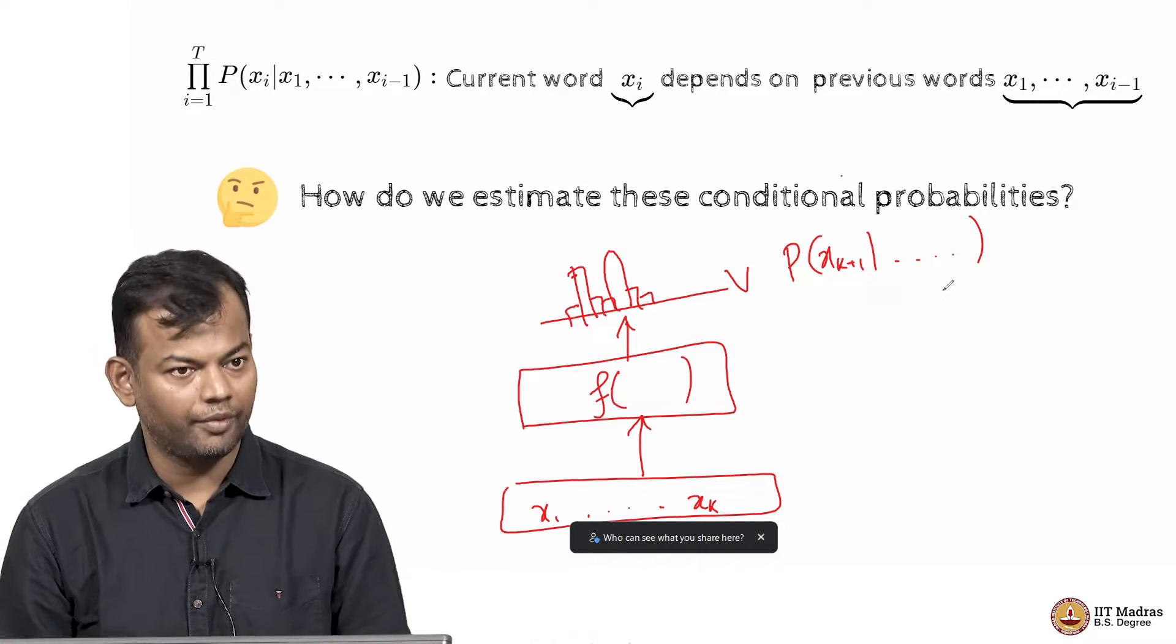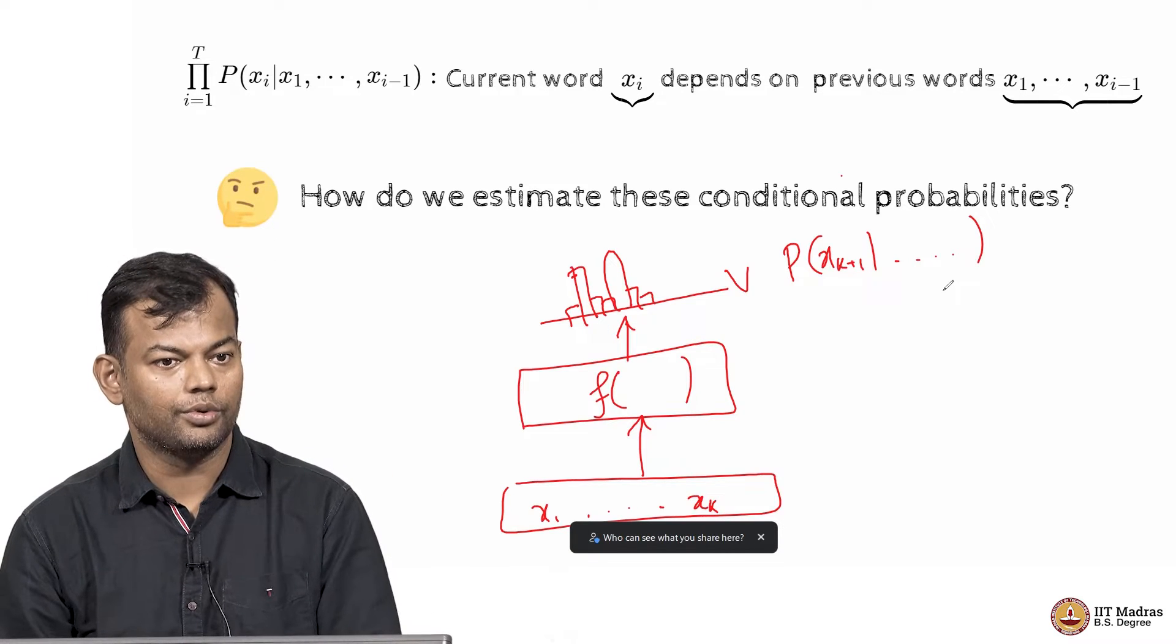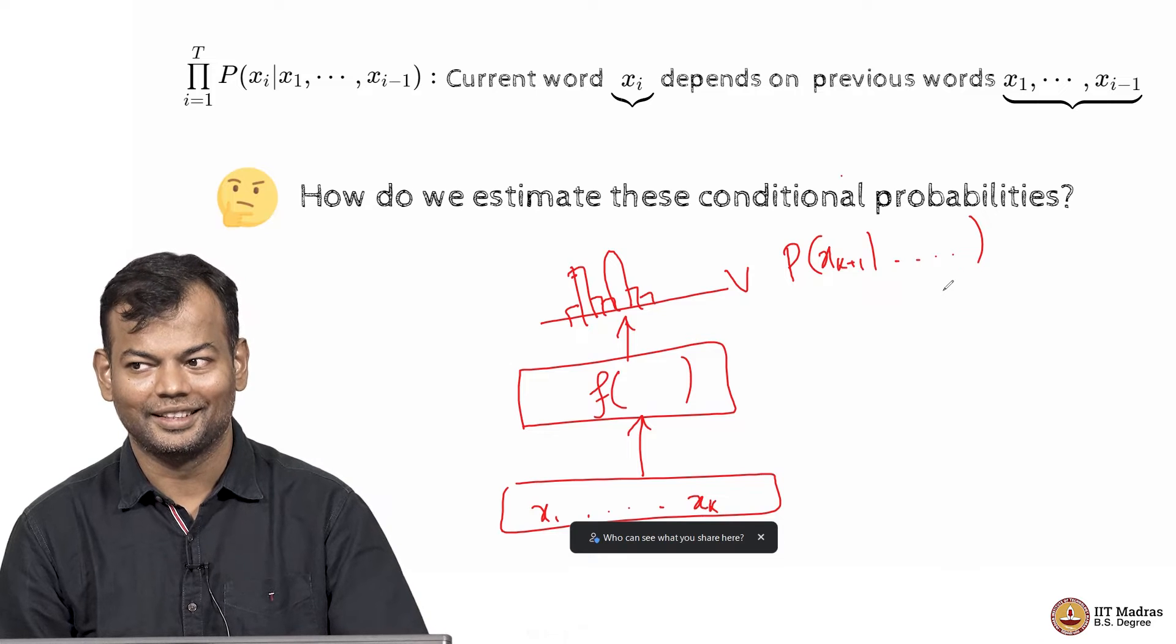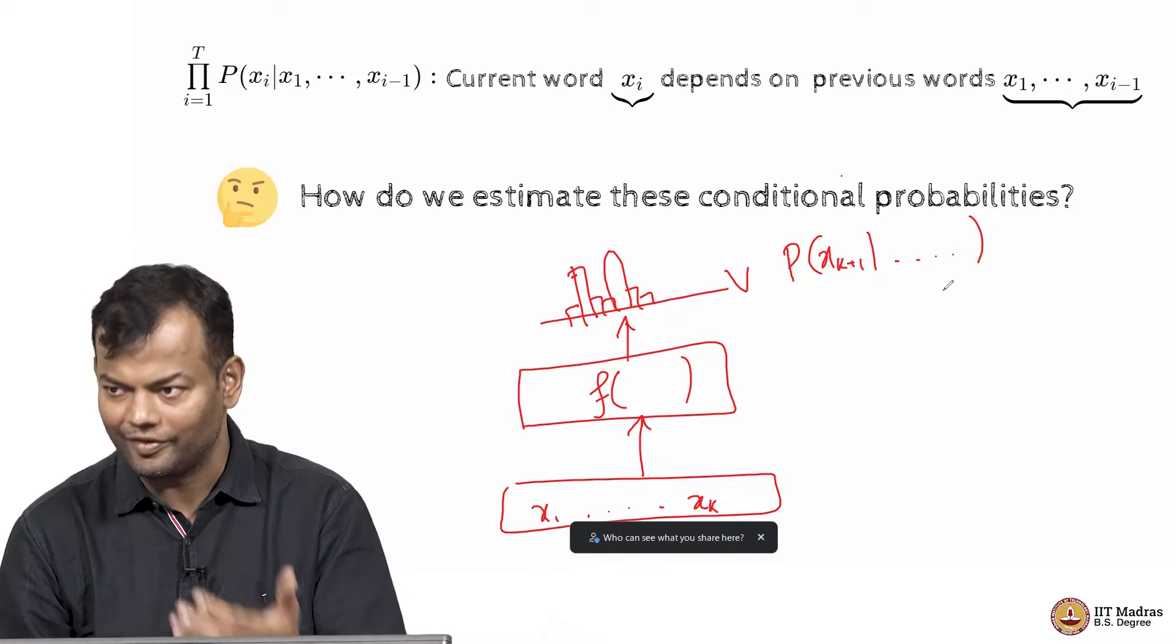Now, how do I come up with a function which takes this input and gives me this probability distribution? Have you ever seen such functions? We say yes. Encoder, decoder, any of the deep learning functions that we have been doing this.